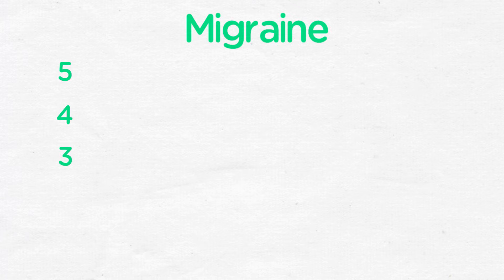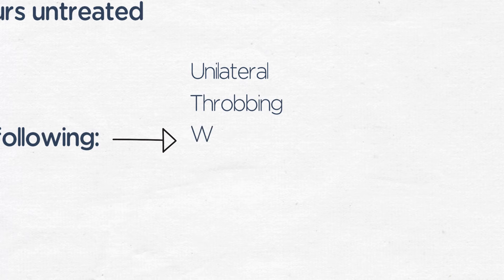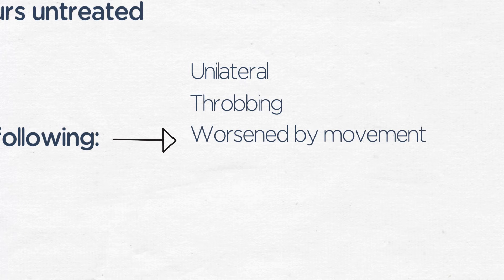Migraine follows the 5-4-3-2-1 rule. The International Headache Society features of migraine include five or more attacks, repeated episodes lasting four hours to 72 hours untreated, and any two of the following: unilateral, throbbing, worsened by movement, and moderate to severe.